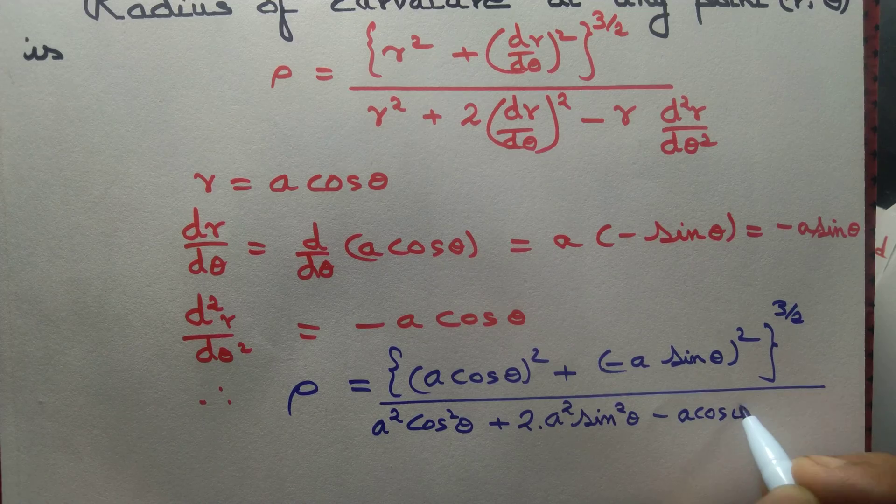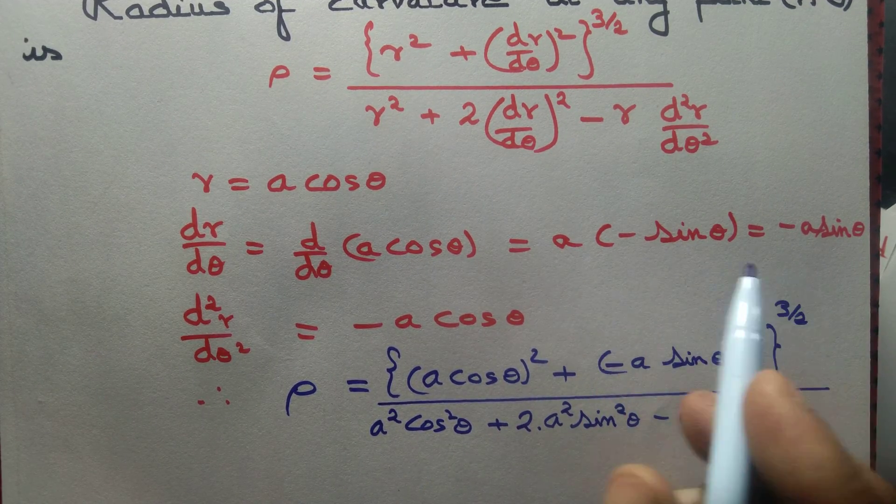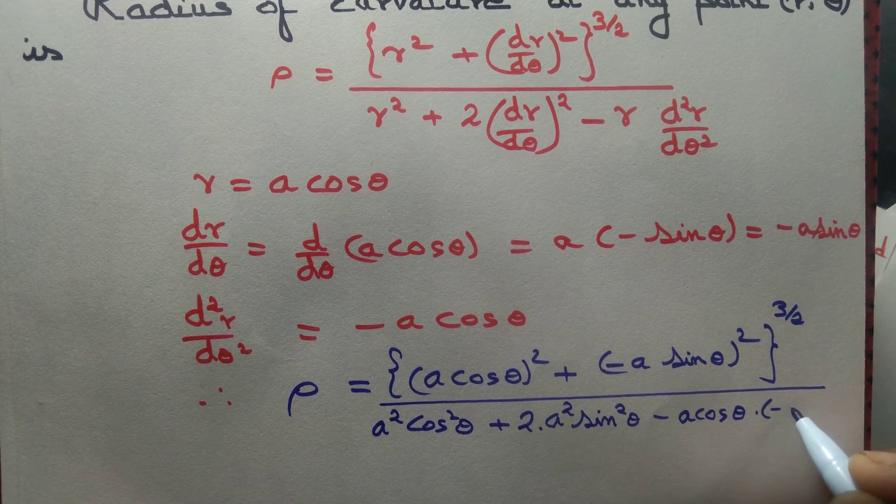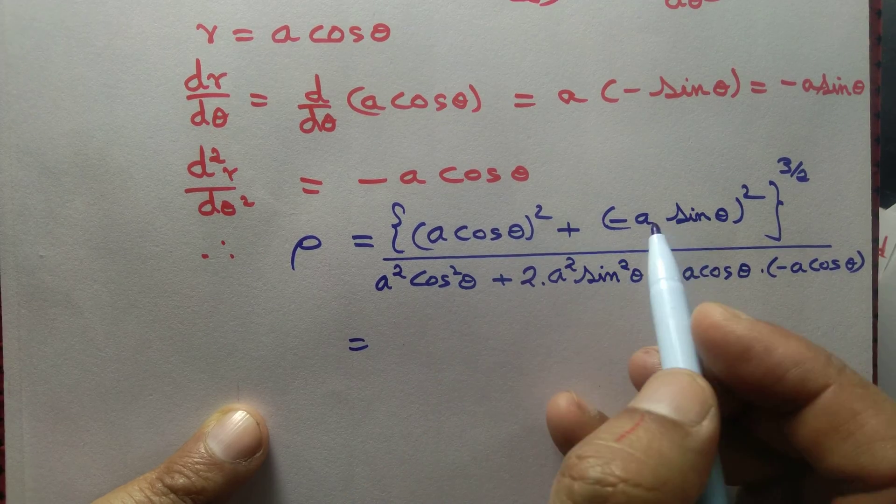r is a cos theta, and then double derivative minus a cos theta. Take a² common. Square and root will get cancelled, and you are left out with a³.